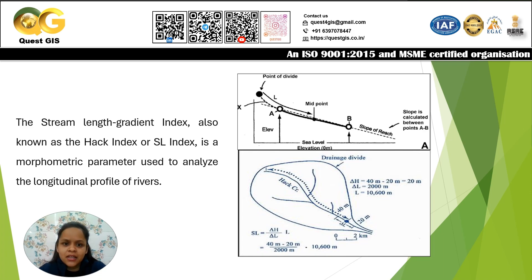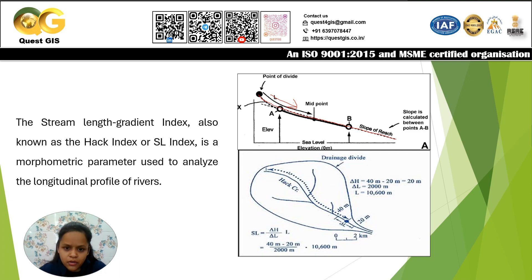The Stream Length Gradient Index — also known as Hack's Index or SL Index — is a morphometric parameter used to analyze the longitudinal profiles of a river. A longitudinal profile of a river is a curve that represents the relationship between height and downstream distance. It reflects the influence of gradient on channel behavior — whether the channel is shifting, following its own path, or experiencing a sudden fall along the river.